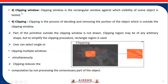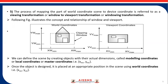Clipping is the process of deciding or removing the portion of the object which is outside the clipping window. The user can select single or multiple clipping windows simultaneously, because clipping reduces computation by not processing the unnecessary part of the object. The process of mapping the world coordinate system to device coordinates is referred to as viewing transformation, or window-to-viewport transformation, or windowing transformation.